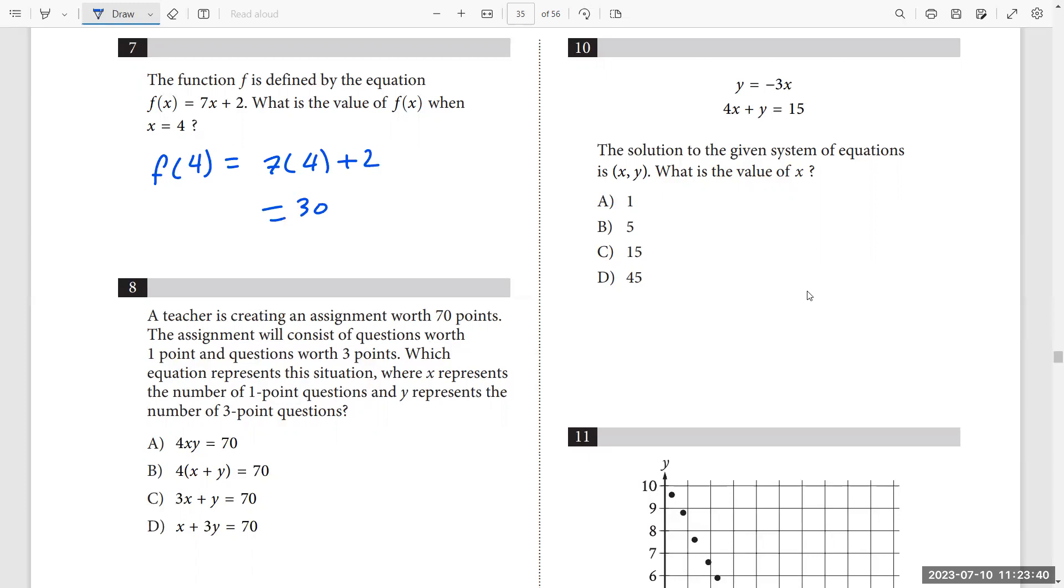Y equals negative 3x and 4x plus y is 15. The solution of the given system of equation is x and y. What is the value of x? You can remove y by substituting the value of y from the first equation to the second equation. So writing the second equation 4x plus, now don't write y. Write its value from the first equation, negative 3x. This is a substitution. So 4x plus negative 3x is 1x. 1x is 15. So x is 15.